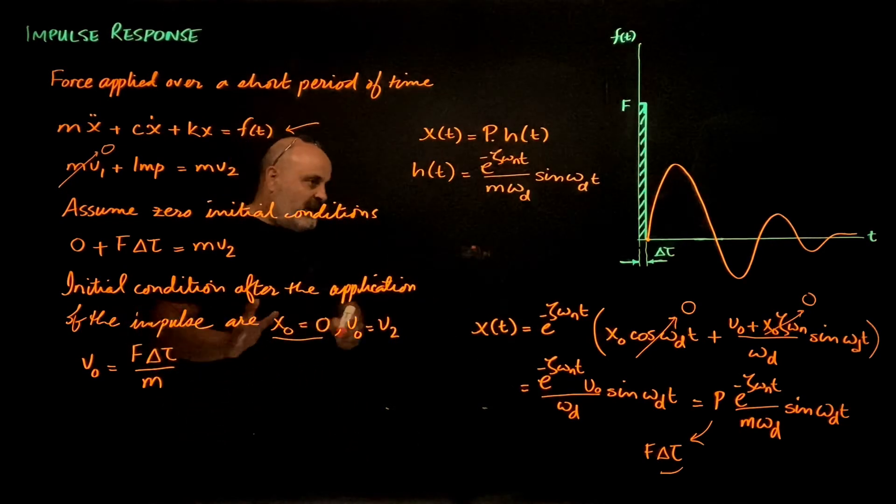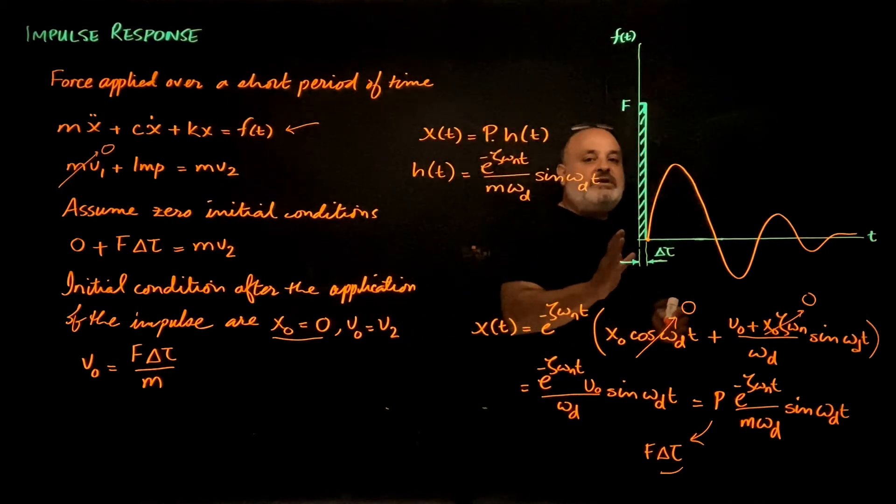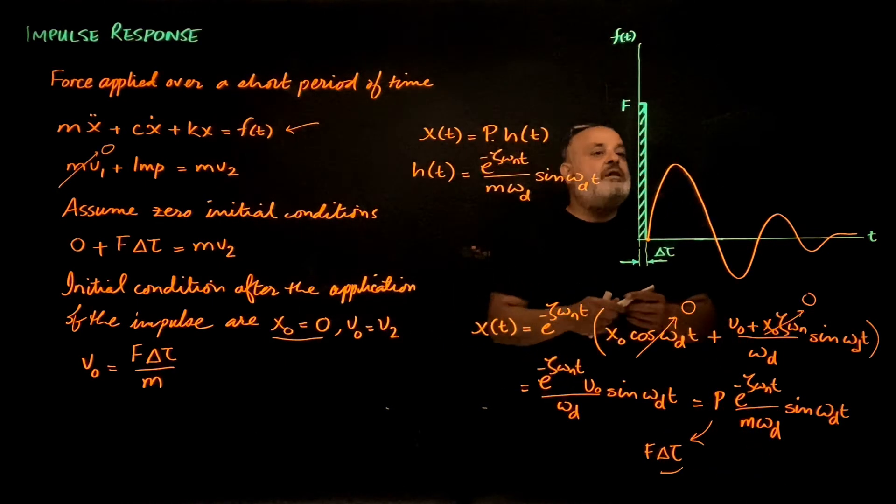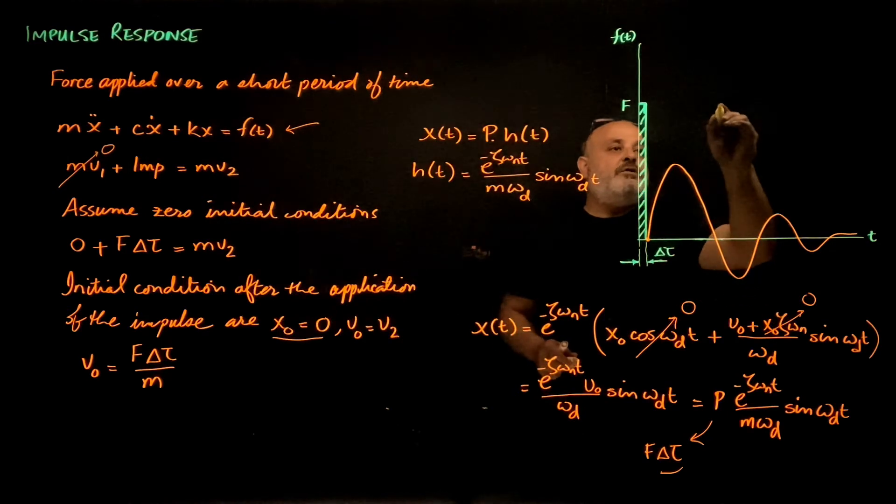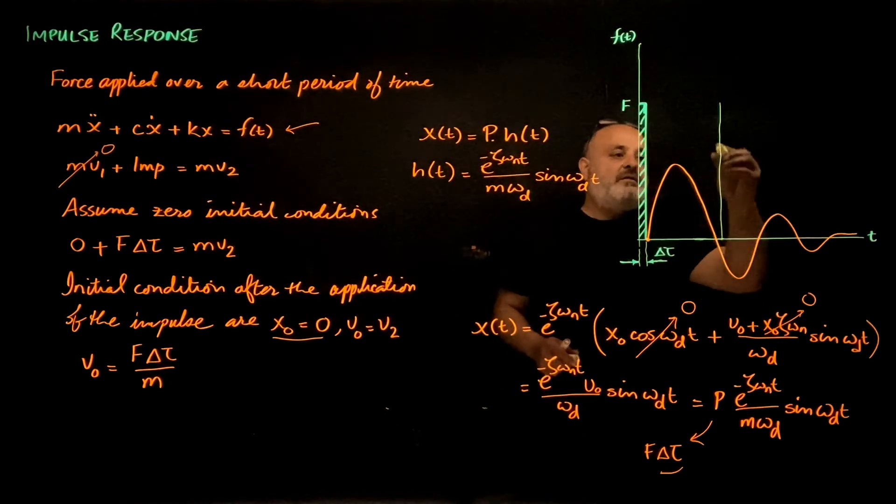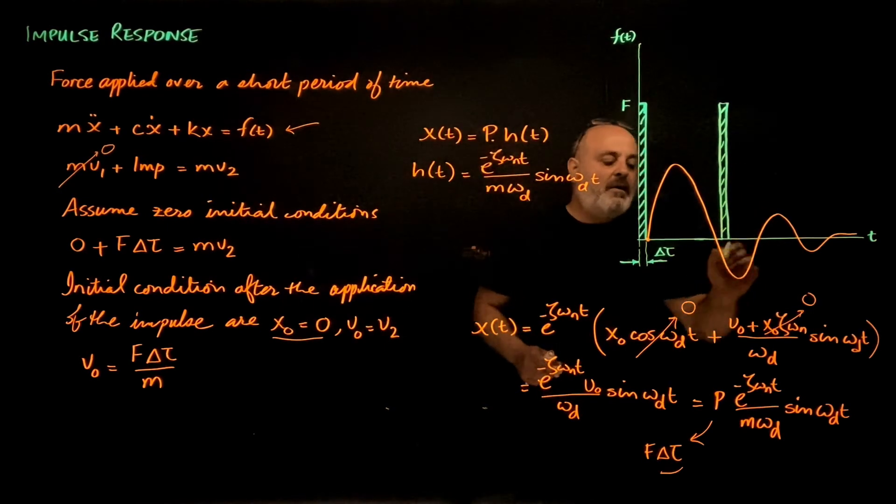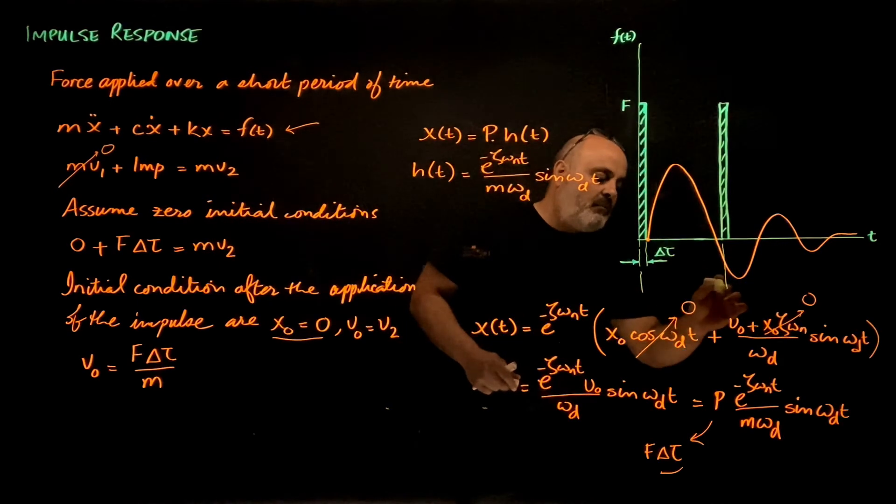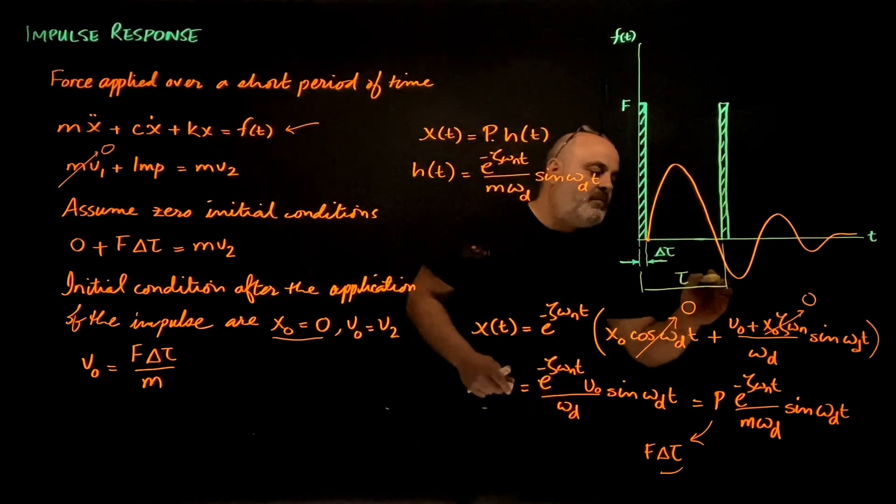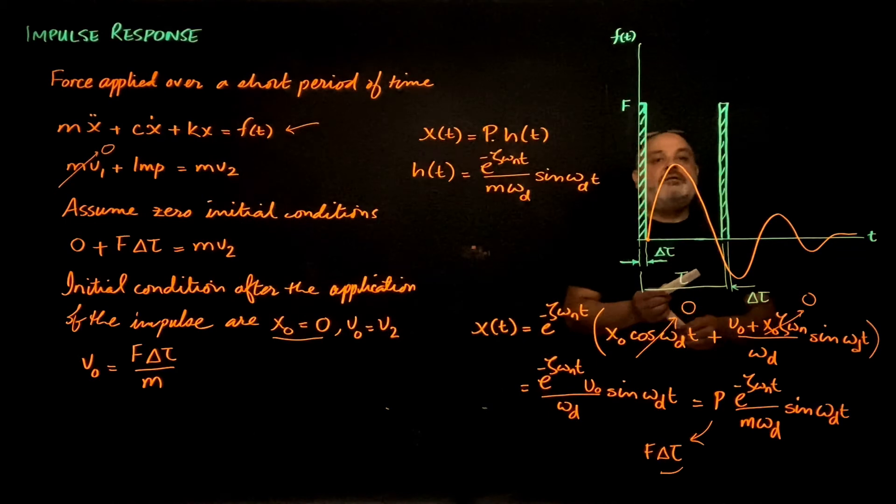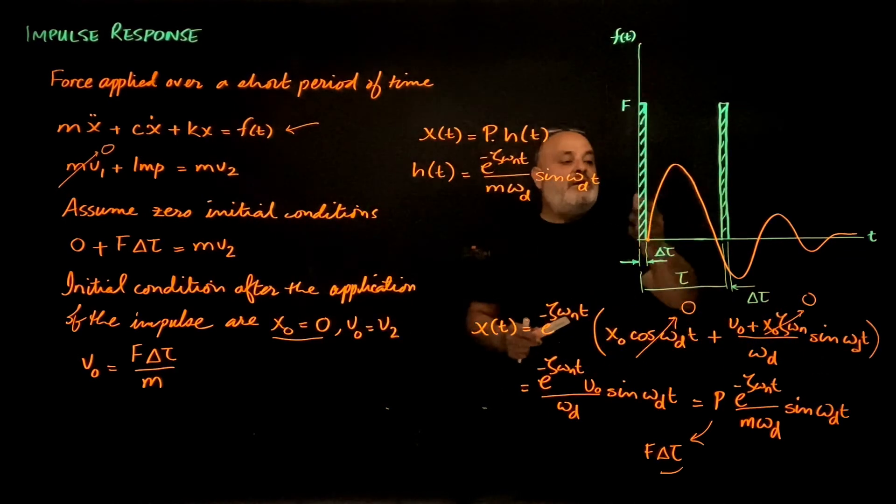Now that's for an impulse applied at time t equals zero. Now what if the impulse is applied at some other time? Let's say the impulse was applied at time tau for a duration of delta tau.